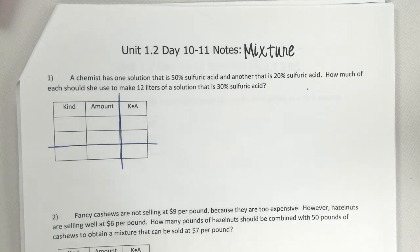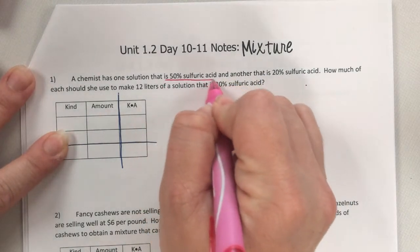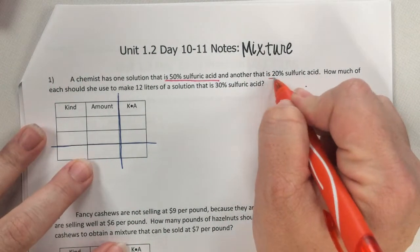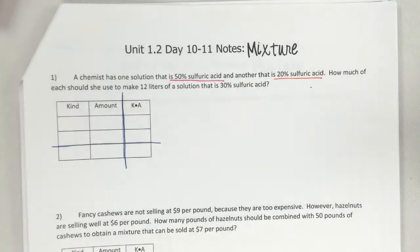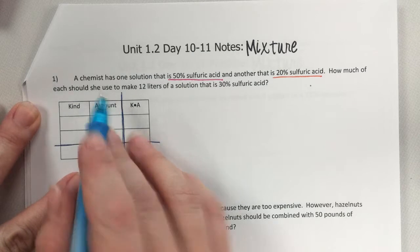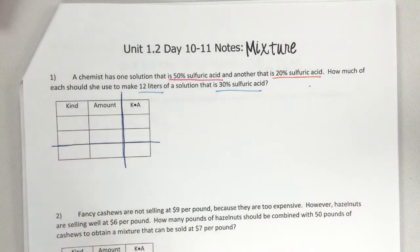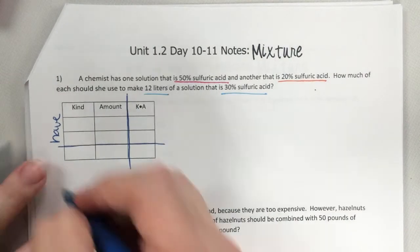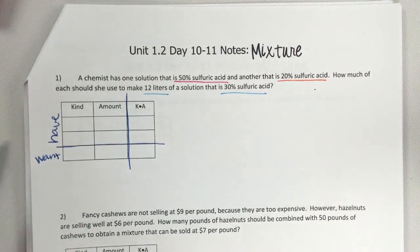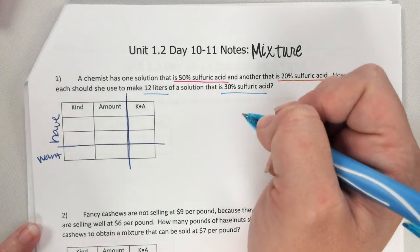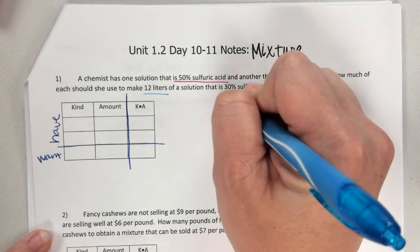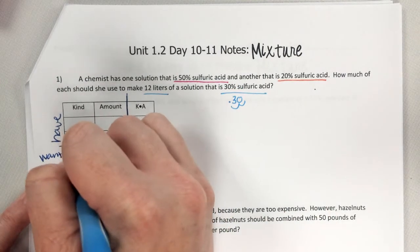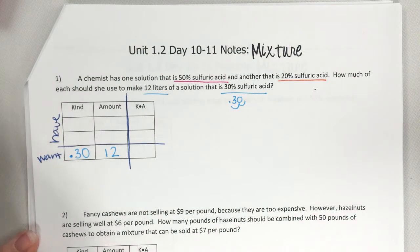So I like to draw these lines to make them bolder so they stand out to me. Pretty much mixture is exactly what it sounds like. We're mixing two things to create something we want. This happens in real life. A lot of our examples are science. This first one says a chemist has one solution that's 50% sulfuric acid, another solution that's 20% sulfuric acid, and it says how much of each should she use to make 12 liters of 30% sulfuric acid? So what I want you to realize is at the top of this table, it's what you have. At the bottom of the table, it's what you want.